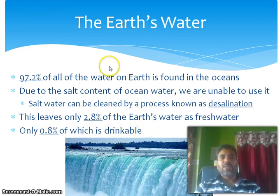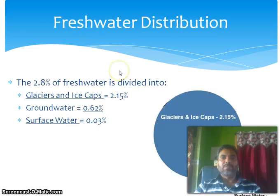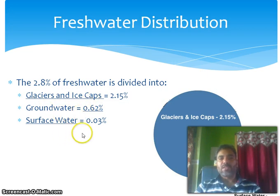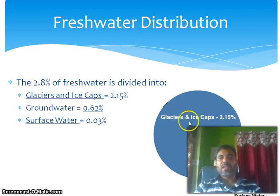This is about earth's water. Now, fresh water distributions. The 2.8% of fresh water is divided into glaciers and ice caps, ground water, and surface water. This pictorial diagram shows glaciers and ice caps, and this is ground water.